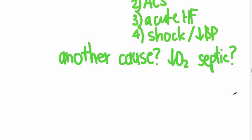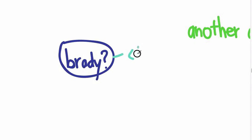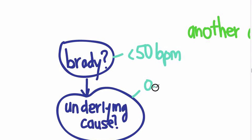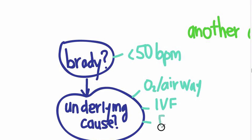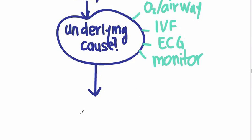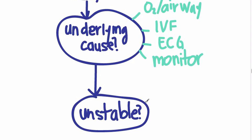Let's go over that algorithm in more detail. The first thing you want to do is confirm they are bradycardic — a heart rate less than 50 beats per minute — then look for an underlying cause. That might be hypoxia, airway issues, or volume depletion requiring IV fluids. Check an EKG for ischemia or dysrhythmia, put the patient on the monitor — our ER mantra: IV, O2, monitor. Then assess whether the patient is unstable: altered mental status, chest pain, acute heart failure, or shock.